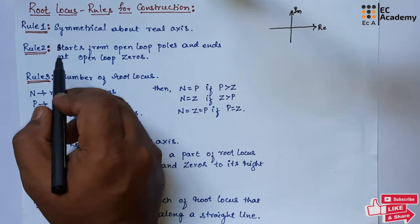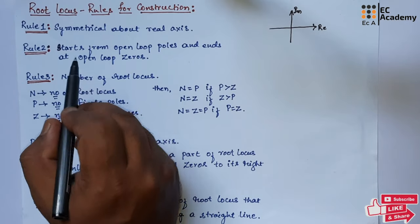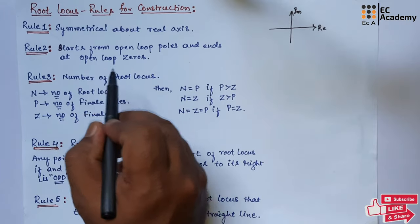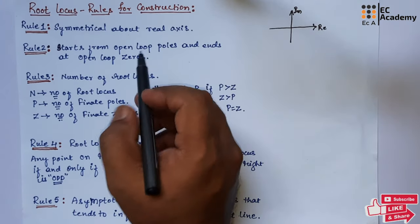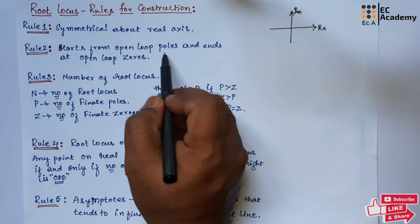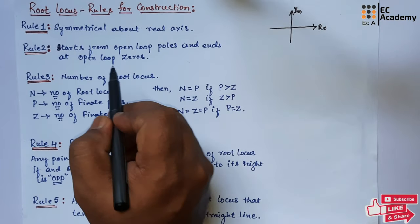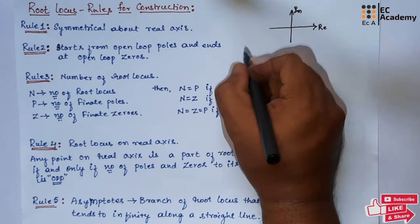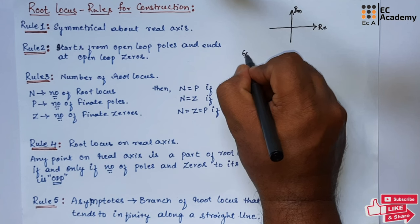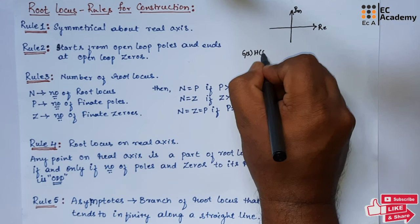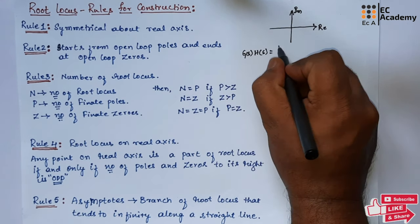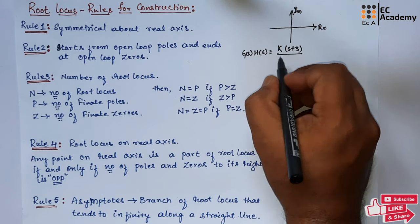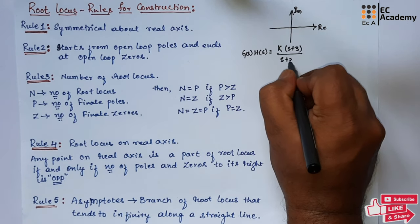Rule 2 states that root locus starts from open-loop poles and ends at open-loop zeros. To understand this, let us take an example: G(S)·H(S) is equal to K into (S + 3) divided by (S + 2).